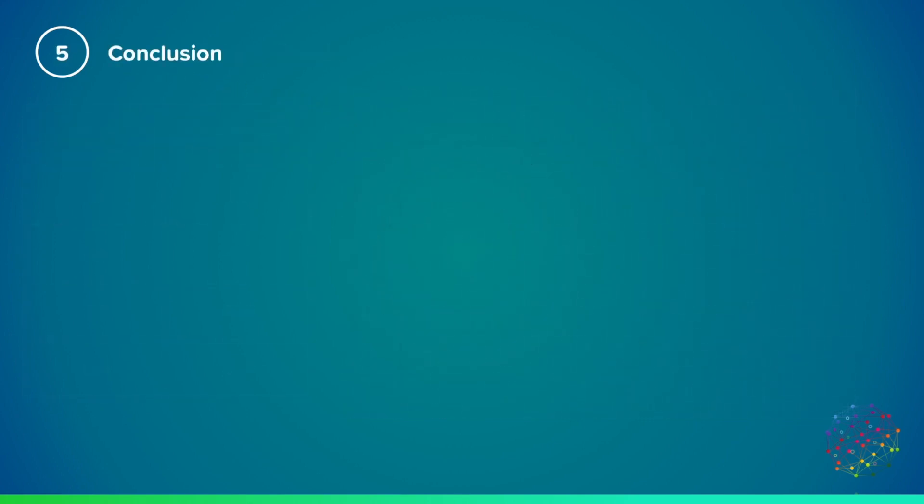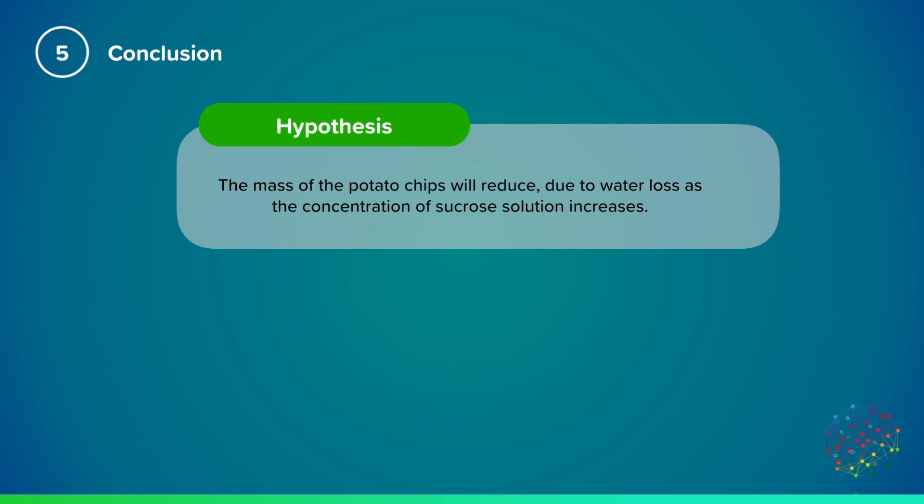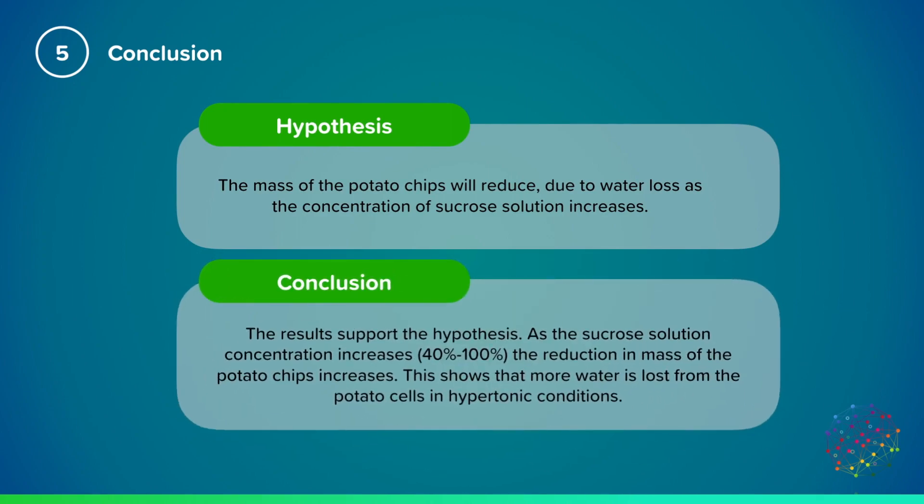The original hypothesis for this investigation was that the mass of the potato chips were reduced due to water loss as the concentration of sucrose solution increases. Having conducted our investigation, we can conclude that the results do support the hypothesis. As the sucrose solution concentration increases between 40% and 100%, the reduction in mass of potato chips is increased. This shows that more water is lost from the potato cells in hypertonic conditions.